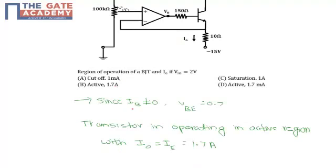So since IB will not be equal to 0, VB value will be 0.7, the transistor is operating in the active region with I0 and IE value will be 1.7 amps.